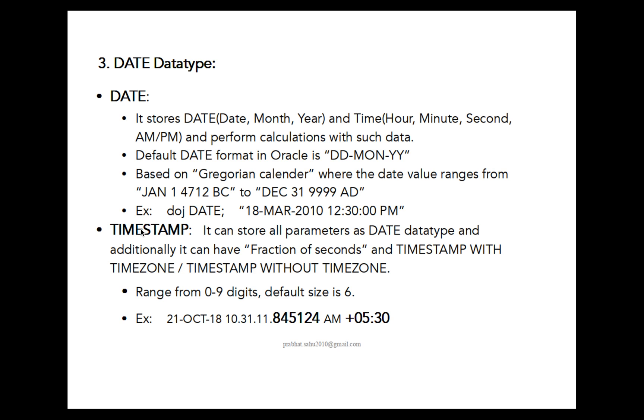Under date type, TIMESTAMP will also be there. How TIMESTAMP is different from DATE? TIMESTAMP supports all the parameters those are used by DATE. Additionally it is using the fraction of seconds, and also it is having TIMESTAMP WITH TIMEZONE, TIMESTAMP WITHOUT TIMEZONE, TIMESTAMP WITH LOCAL TIMEZONE. This TIMESTAMP range is from 0 to 9 digits and default size will be 6. Suppose you will write SELECT SYSTIMESTAMP FROM DUAL, then it will show such type of data.